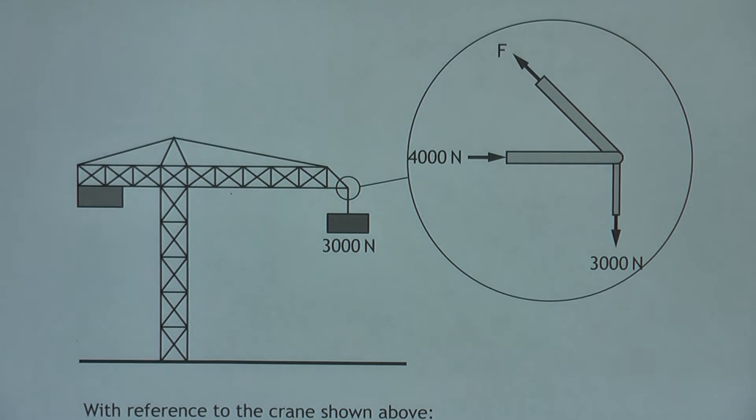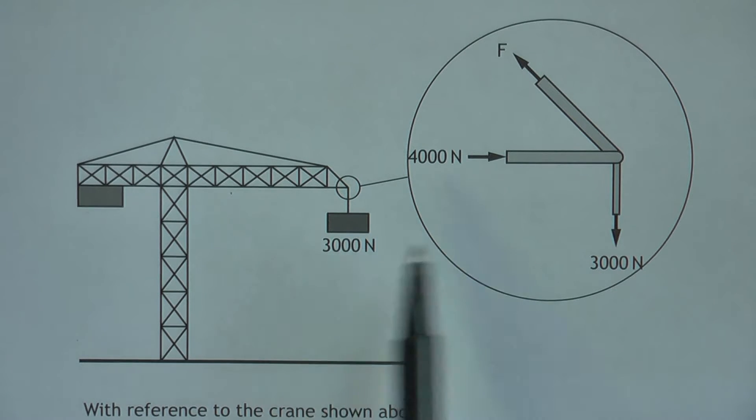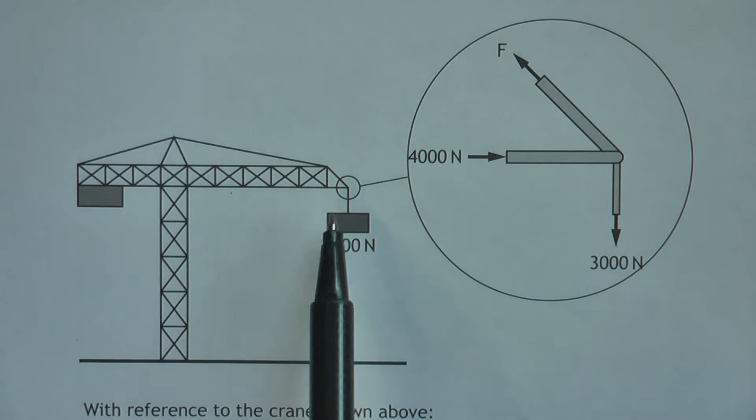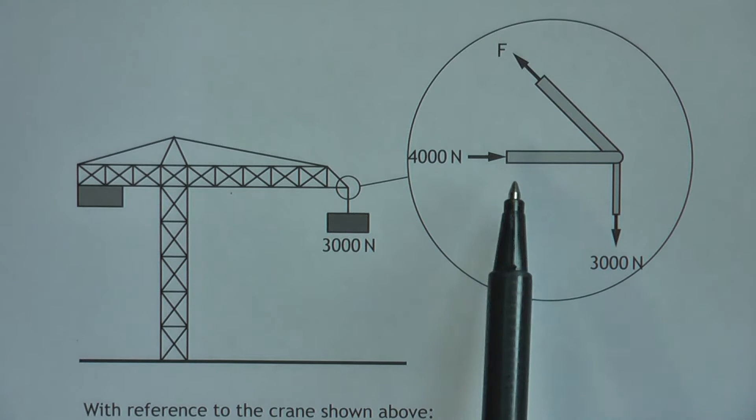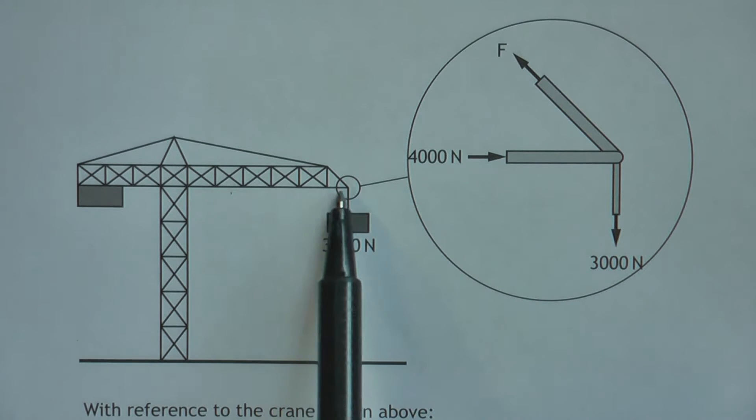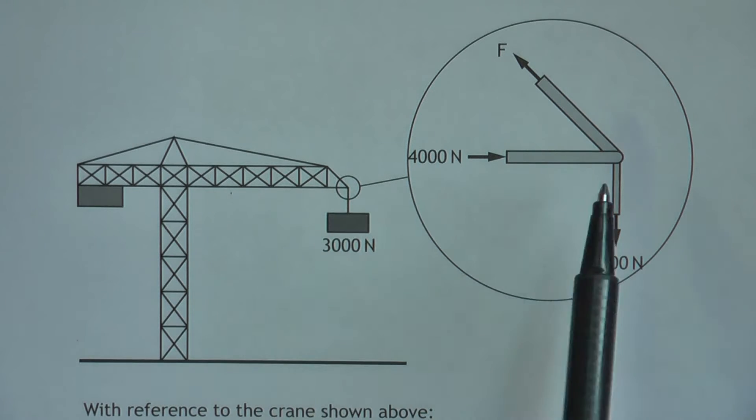Right, here we have a forces question. At that point in the crane, there's a load of 3,000 newtons pulling down the way, and they must have measured the force in that horizontal member there as 4,000. So we know 4,000 there, 3,000 there, but we don't know what the force is going up there.